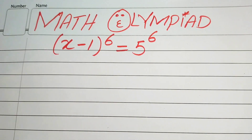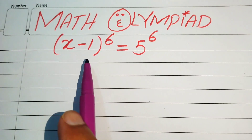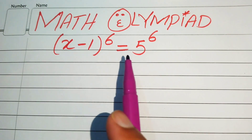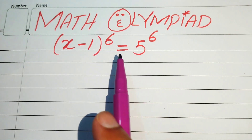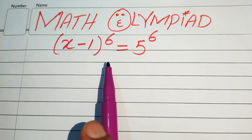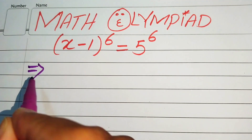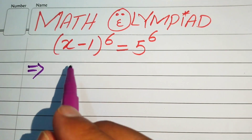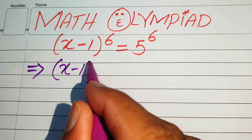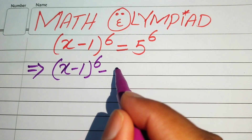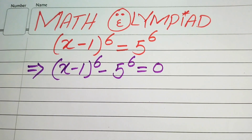Hello everyone, welcome. We are going to solve this algebra problem: (x minus 1) to the power of 6 equals 5 to the power of 6, and we will solve for the values of x. The very first step is to move the 5 to the power of 6 to the left-hand side, giving us (x minus 1) to the power of 6 minus 5 to the power of 6 equals 0.